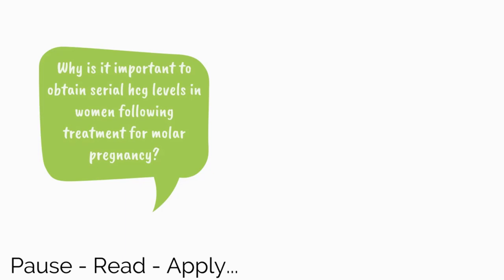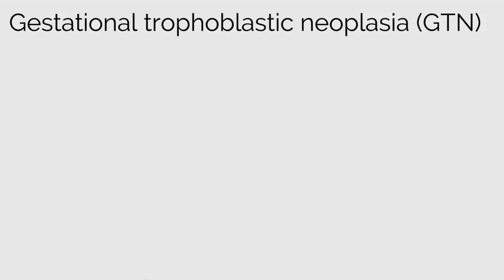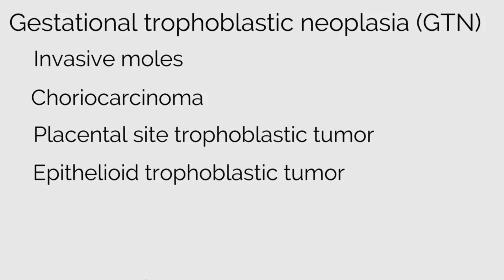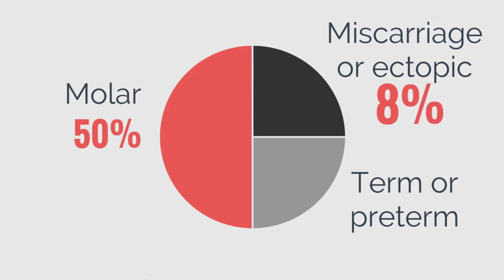Women with molar pregnancies have an increased risk of developing gestational trophoblastic neoplasia. The incidence of GTN following a complete mole is 15–20%, and the risk following a partial mole is 1–5%. GTN encompasses invasive moles, choriocarcinoma, placental site trophoblastic tumors, and epithelioid trophoblastic tumors, characterized by aggressive invasion of the endometrium and myometrium by trophoblast cells. GTN is diagnosed based on elevated beta-HCG levels and managed clinically, as tissue is not often attained. Approximately 50% of GTN cases arise from molar pregnancy, 25% from miscarriage or ectopic, and 25% from term or preterm pregnancy.